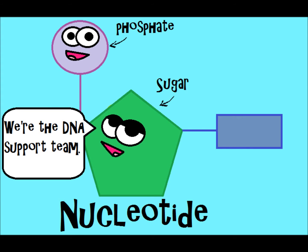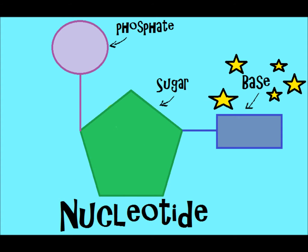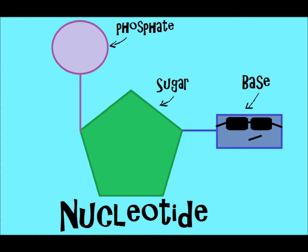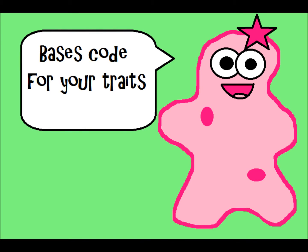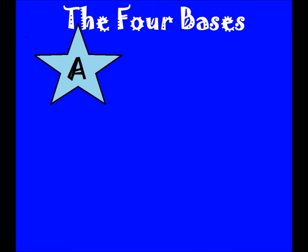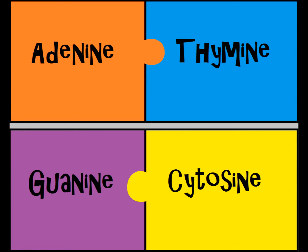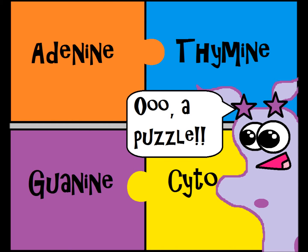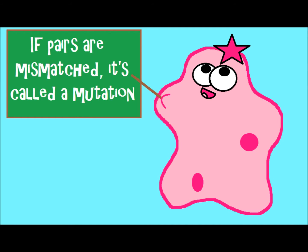The most important part of the nucleotide is the base, because bases actually code for traits. There are four bases in DNA, often represented by their initials: A for adenine, T for thymine, G for guanine, and C for cytosine. These bases pair in a specific pattern. If they get mismatched, that's actually what we call a mutation.